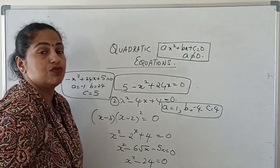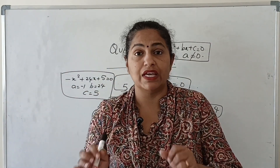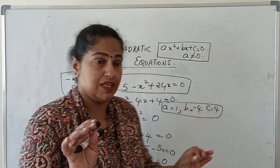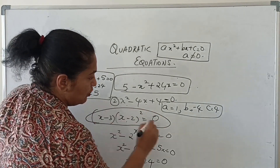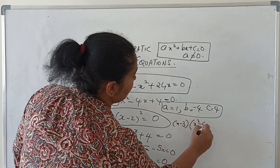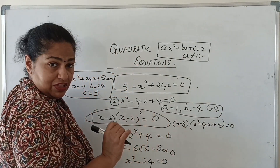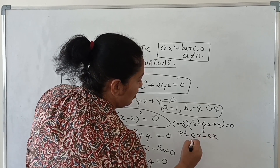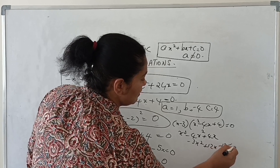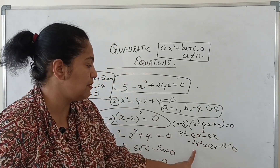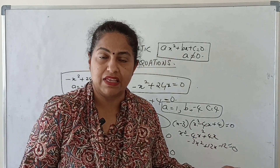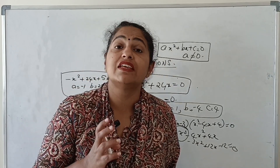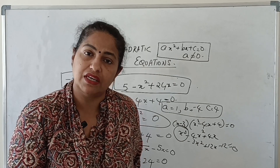The third one: (x − 3)(x − 2)² = 0. Whenever you get questions like this where the term is not in expanded form, you need to open the bracket and multiply. Opening (x − 2)² gives x² − 4x + 4, then multiplying by (x − 3) gives x³ − 4x² + 4x − 3x² + 12x − 12 = 0, which simplifies to x³ − 7x² + 16x − 12 = 0. The highest power is 3, so this is not a quadratic equation — it is a cubic equation.